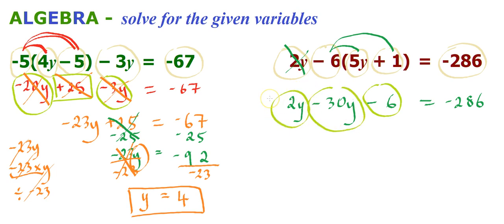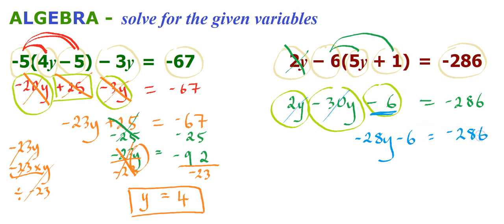The next step is to identify our terms and collect like terms to simplify. There are y terms: 2y and minus 30y, which gives us minus 28y. The other term is minus 6, so we drop that down. And we also just drop down minus 286 from the right-hand side, which we haven't touched. Now we can solve because we've simplified the left-hand side into something workable.